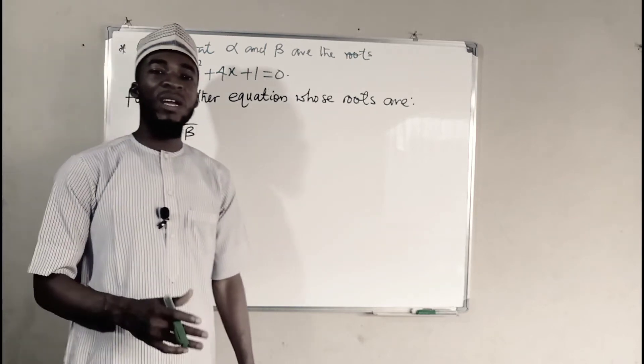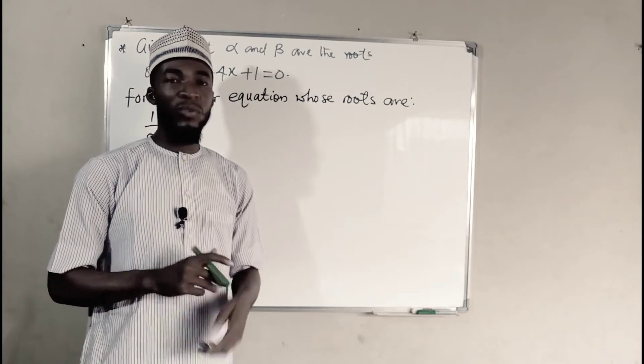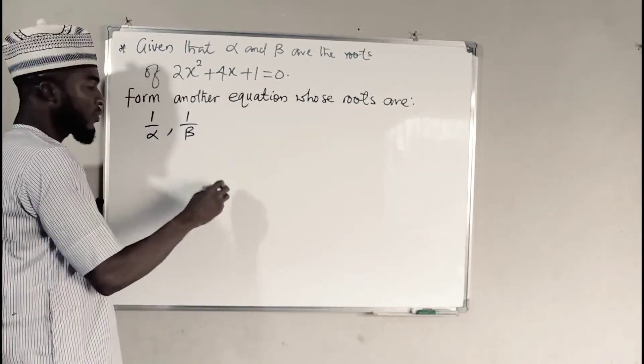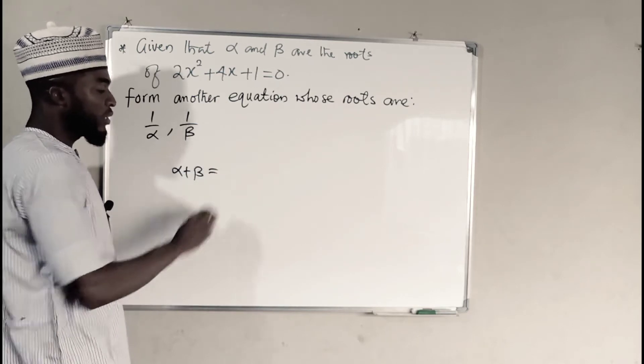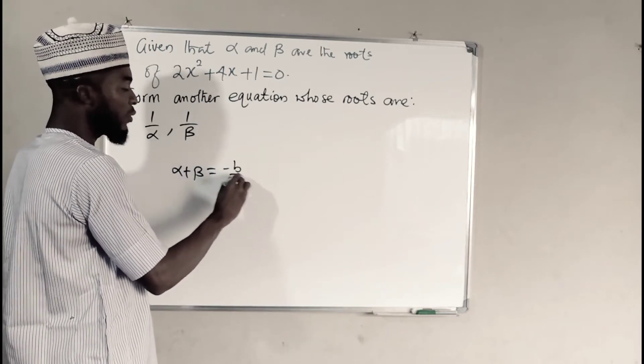So I told you, before you start, you need to find the sum and the product of that quadratic equation. So we have alpha plus beta as sum of the roots to be equal to negative b over a.